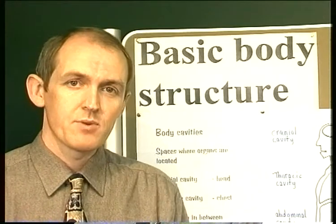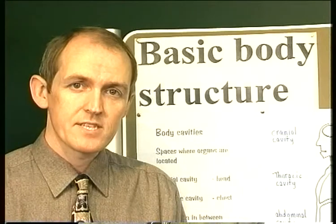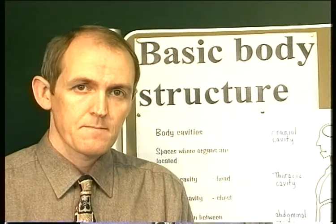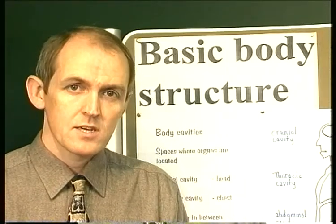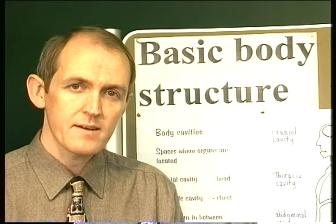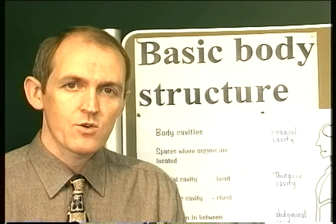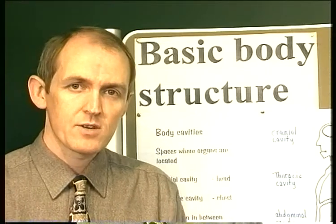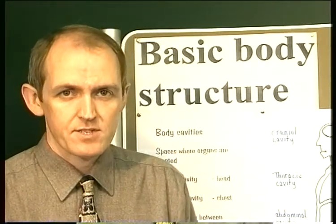The first thing I want to point out about basic body structure is that the body is arranged in a series of cavities, and the main organs of the body are located in those cavities. Just for a bit of revision, we know that the body is made out of cells, and a group of similar cells we refer to as a tissue. Tissues are grouped together in particular structures and generate limbs and organs. So we're going to start off by looking at the body cavities and then the organs which are in those body cavities.